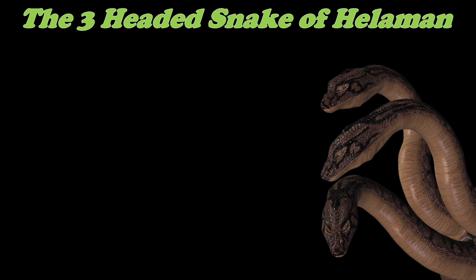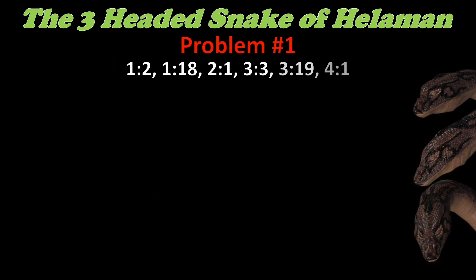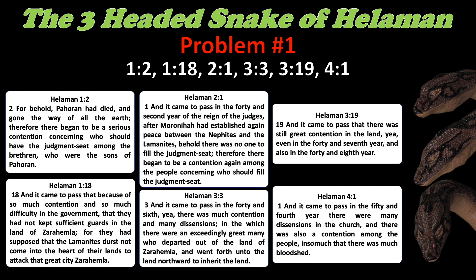Did you find problem number one? The answer is contention — contention amongst the Nephites themselves, specifically political contention. In chapter 1, they contend over who should be their next leader, because Pahoran dies. Three of Pahoran's sons are all vying for the judgment seat, causing three divisions among the people. Pahoran II is elected by the voice of the people, but Paanchi can't accept defeat. He stirs his supporters up in rebellion against his brother. He's discovered, tried, and condemned to death. His supporters then have a man named Kishkumen secretly murder Pahoran.